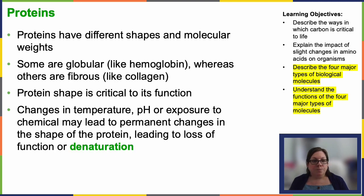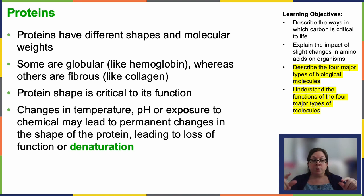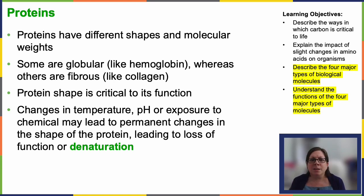Proteins have different shapes and molecular weights — you can have very large proteins or large protein complexes with multiple proteins connected to each other, or long fibrous proteins like collagen that form these long chains. Protein structure is really critical to function. If a protein doesn't fold properly, it can't perform its job properly. Changes in temperature, pH, and exposure to certain chemicals can cause changes in protein shape — we call this denaturation.